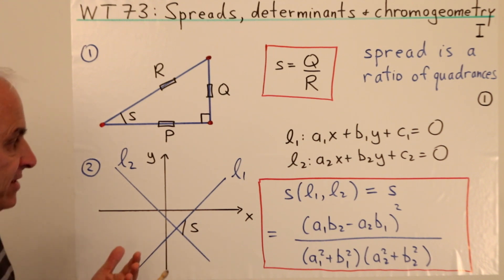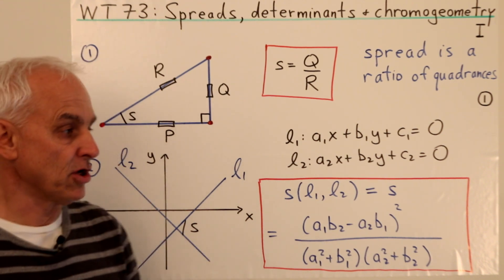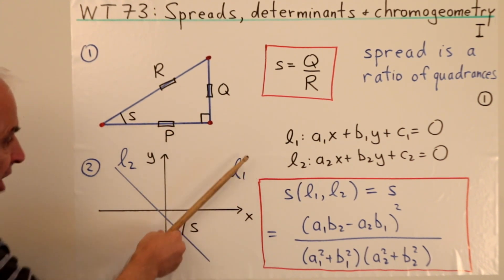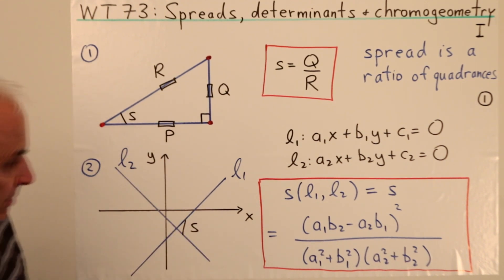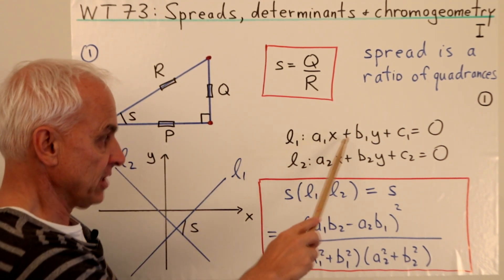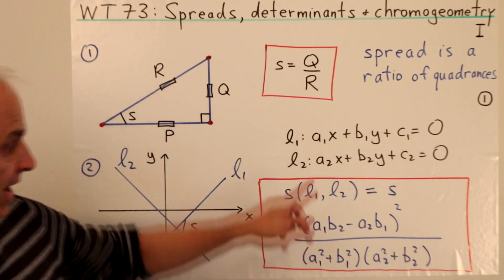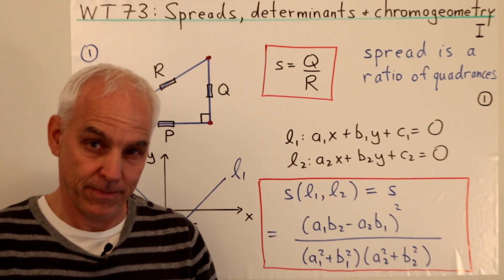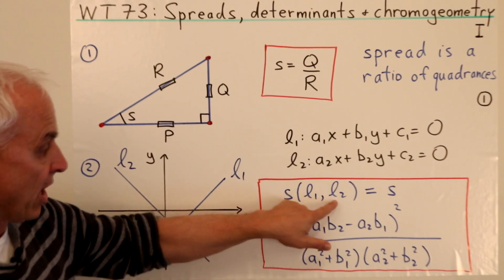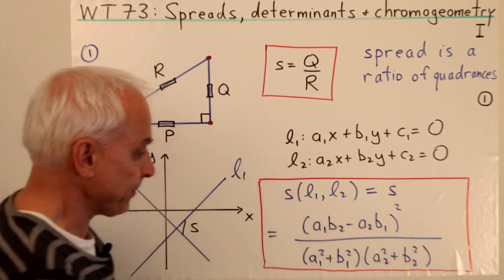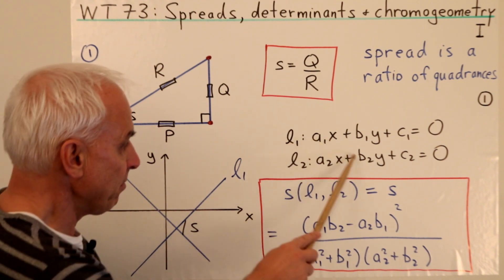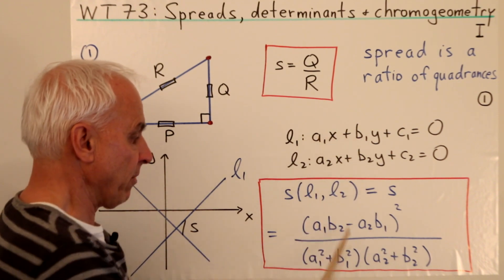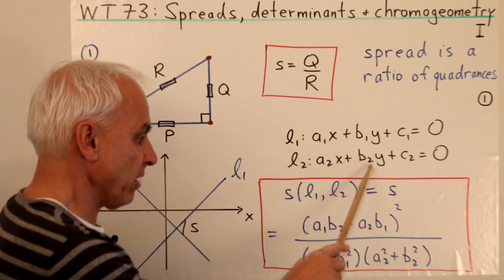Now we also have seen that there's an alternate formula for it in terms of the equations of the lines. So if we're in the ordinary X, Y axes, and here's a line L1 and here's a line L2, and suppose that L1 has the equation A1X plus B1Y plus C1 equals zero, and L2 has the corresponding equation A2X plus B2Y plus C2 equals zero. In that case, the spread between the two lines is this particular relation: A1B2 minus A2B1 squared all over the product of A1 squared plus B1 squared times A2 squared plus B2 squared.